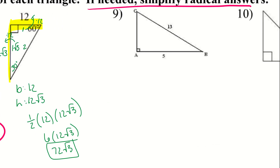For number 9, we have 5 and 13. We need the base and the height — we have the hypotenuse and the base, so we just need to figure out the height. Using our Pythagorean triples, we know there's a triangle that is 5, 12, 13. We check that 13 is the hypotenuse because it's the largest number, so the other leg is 12.